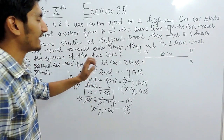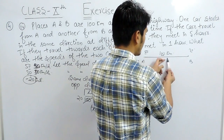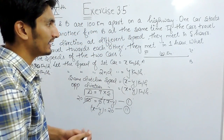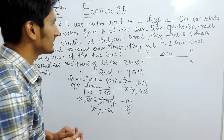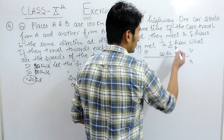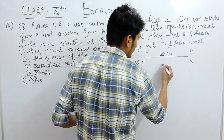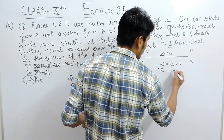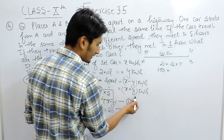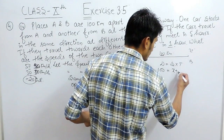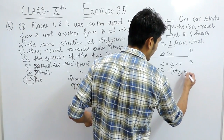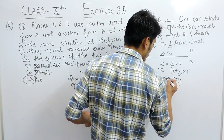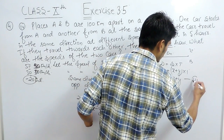Similarly, in the second case when they are walking in opposite directions, they again have to travel 100 km to meet each other, and they take 1 hour. Applying distance = speed × time: 100 = (x plus y) × 1. So x plus y equals 100. This is our second equation.